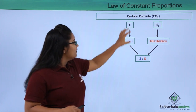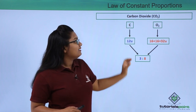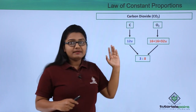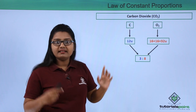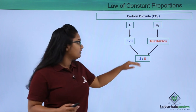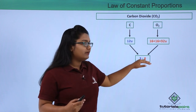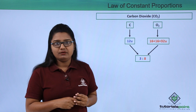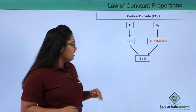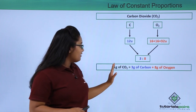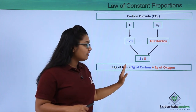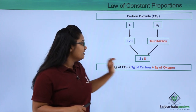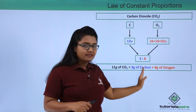Carbon and oxygen are present in carbon dioxide in the ratio 3:8 by mass, whatever the source of the carbon dioxide. So, in 11 grams of carbon dioxide, there are 3 grams of carbon and 8 grams of oxygen.